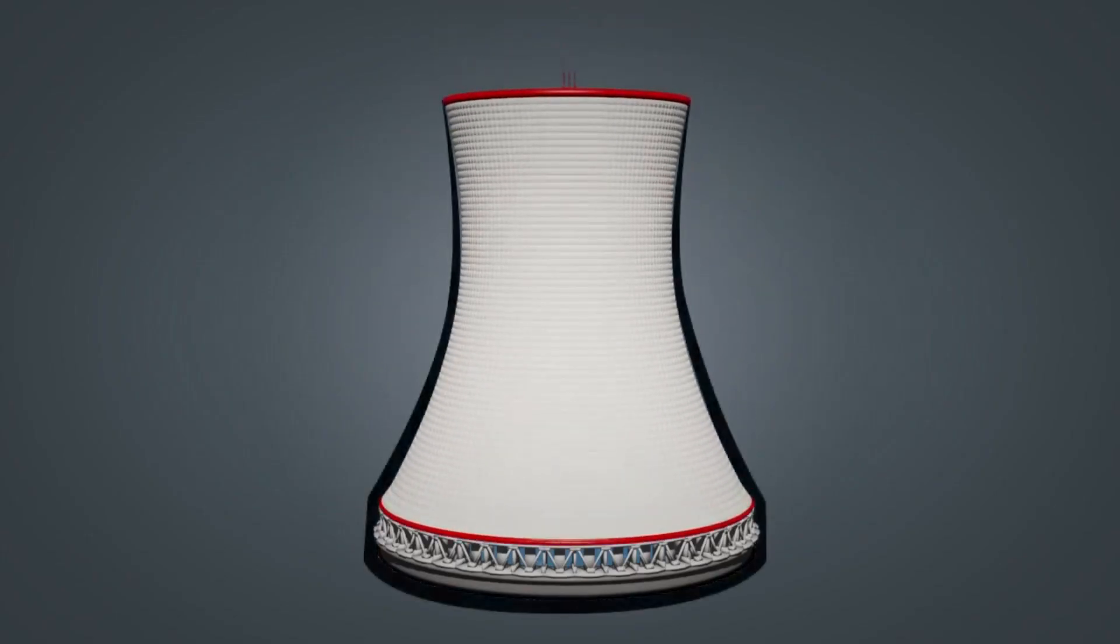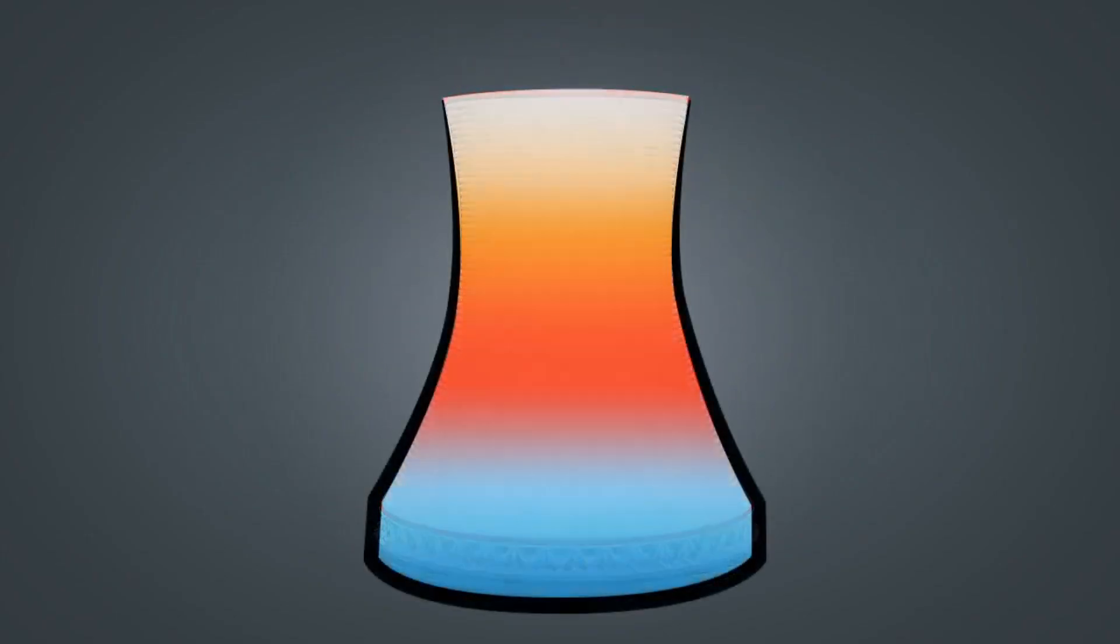A cooling tower works on the principle of natural circulation. Due to the difference in density, the warm air rises up and escapes from the opening at the top of the tower.